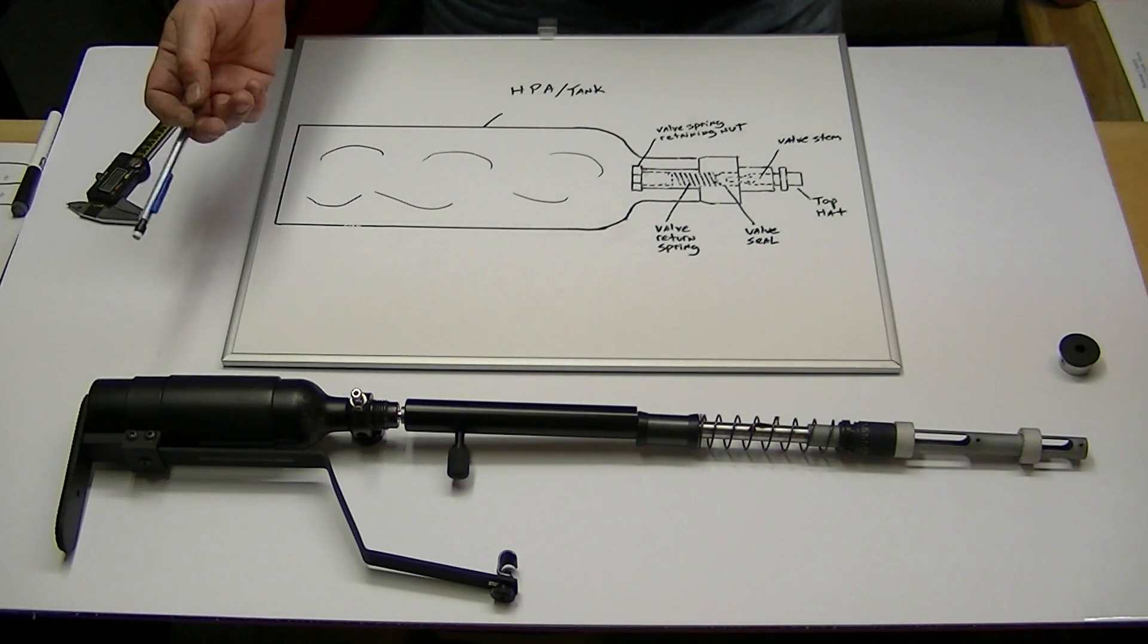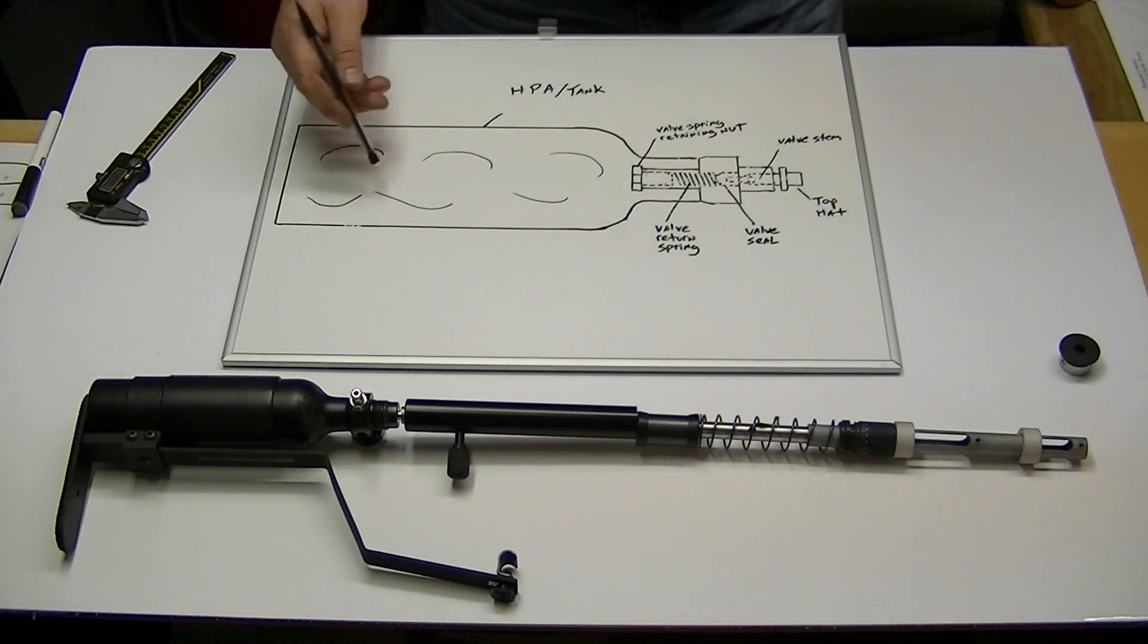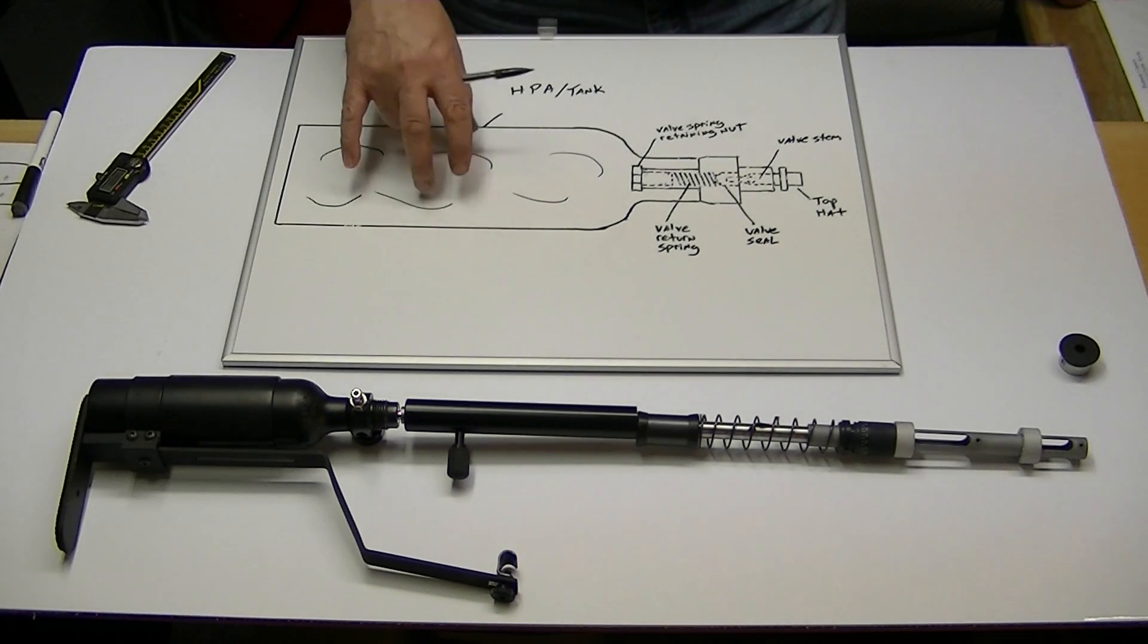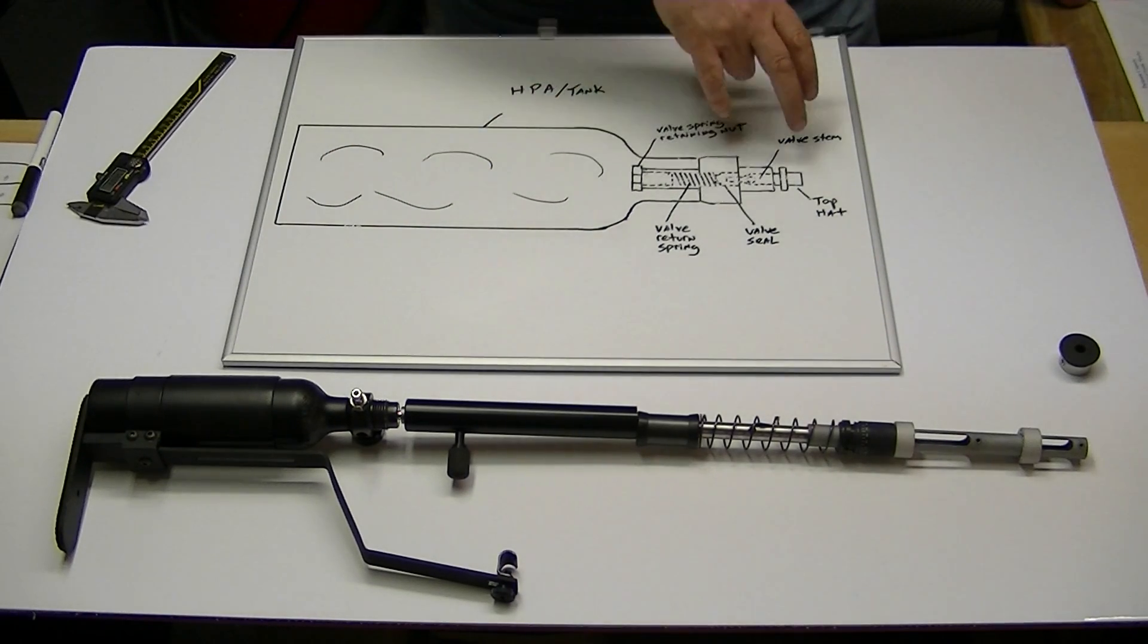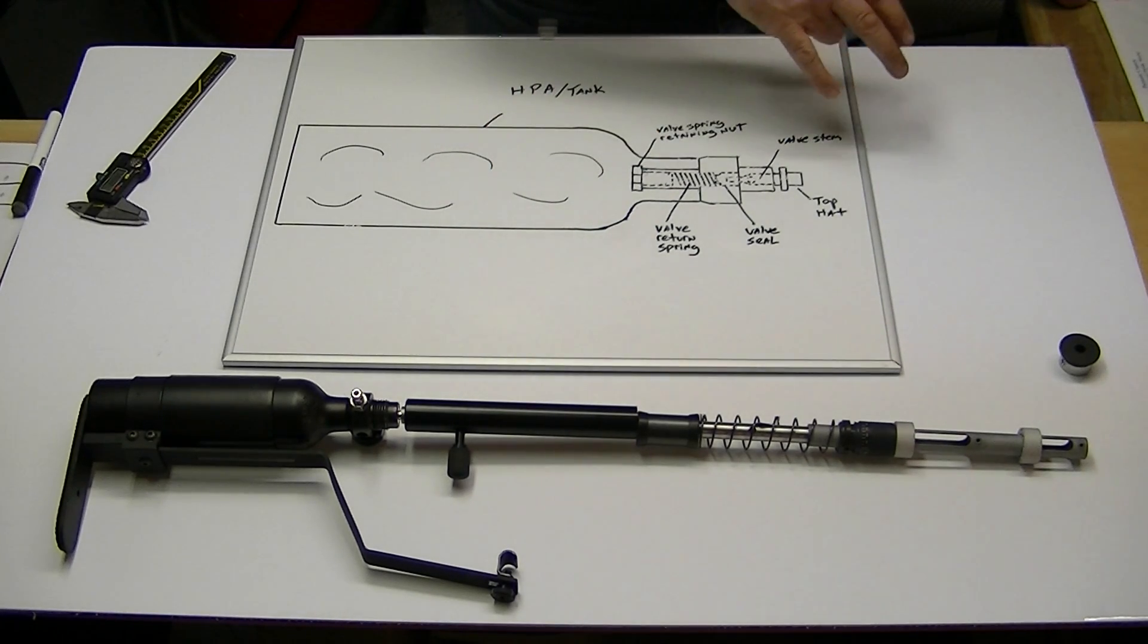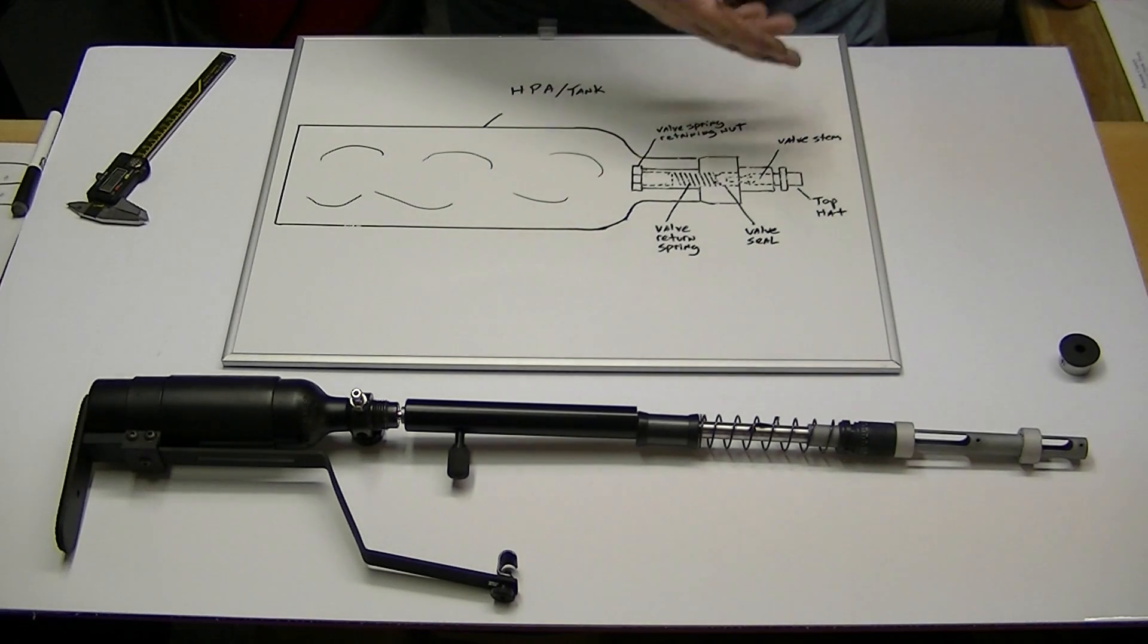You can certainly do that, but chances are, to some degree, you are going to encounter something called valve lock. Valve lock simply means that you have so much pressure inside the tank that it becomes difficult for the valve to open sufficiently to launch the pellet at a rate that's going to be a usable shot for you.